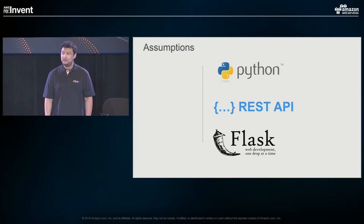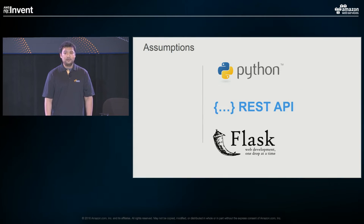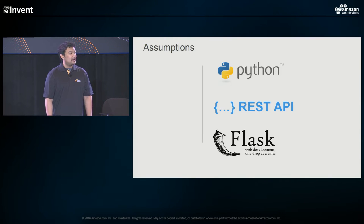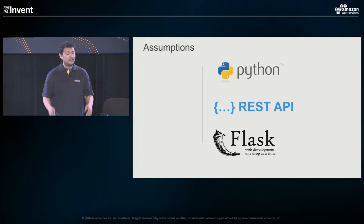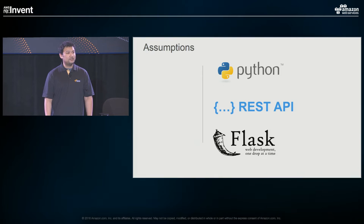Before we get into that, there are a couple of assumptions I'm making. The biggest one is that I assume everyone here can follow along with Python code — we won't use anything advanced. Second, we're not going to spend a lot of time on good RESTful API design. I'm assuming you're at least familiar with it — resources mapped to URLs, leveraging HTTP methods like GET, PUT, POST, and PATCH. And as a bonus, if you've used a microframework in Python before like Flask or Bottle, you'll find Chalice feels right at home.